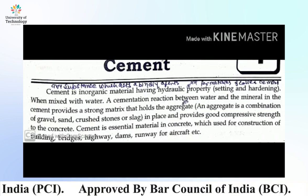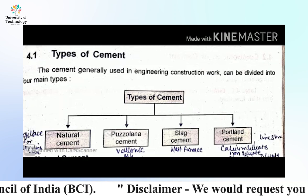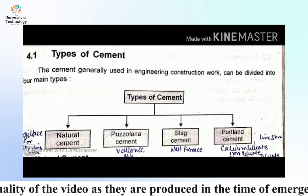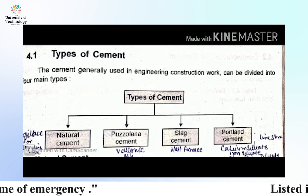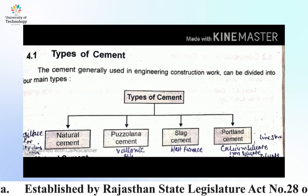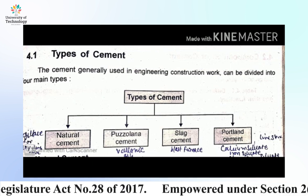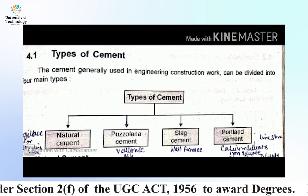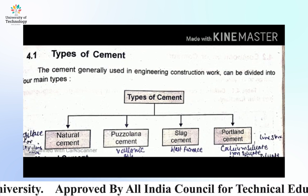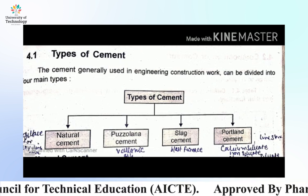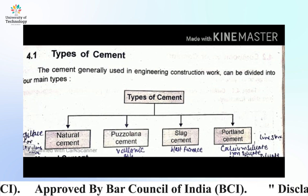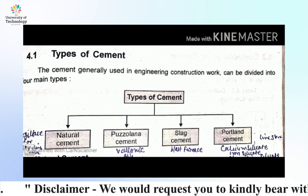Types of cement: the cement generally used in engineering construction work can be divided into four main types. First, natural cement; second, Pozzolanic cement; third, slag cement; and fourth, Portland cement. Natural cement is obtained by the calcination of natural limestone containing 20 to 40 percent clay — it is hydraulic in nature and used in mortar. Pozzolanic cement is derived from volcanic eruption material. Slag cement is obtained from blast furnace slag. Portland cement is the ordinary commercial construction-purpose cement, mixed with water, which upon setting and hardening becomes a hard mass resembling in color and hardness the stone from Portland — hence the name Portland cement.